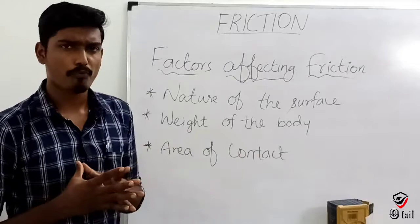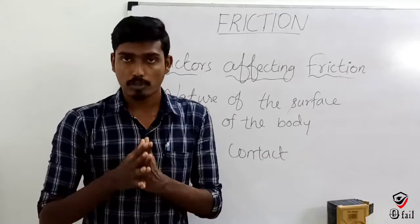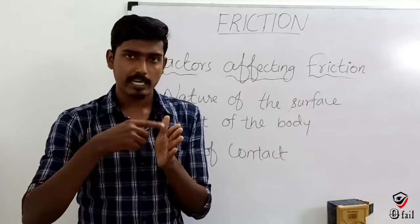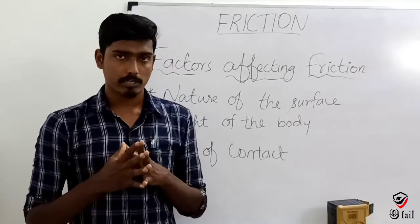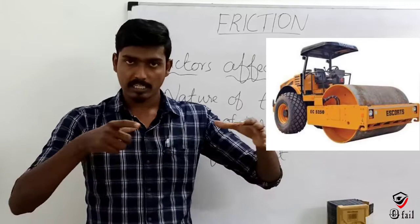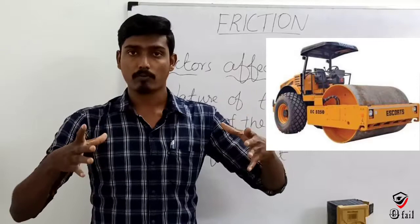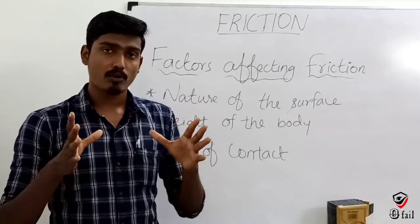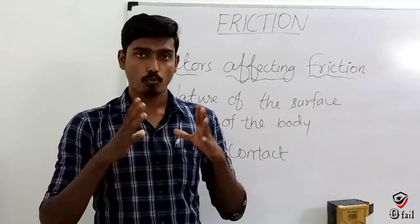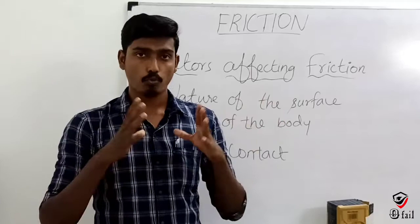The next factor is the area of contact. In a bicycle tire, the contact area with the ground is small, so the friction is small and smooth. But if you look at a road roller, its tire is very broad and wide, giving a very large surface area of contact. Because the area of contact is very large, there is a much higher friction, which opposes the motion of the road roller, making it very difficult to move.